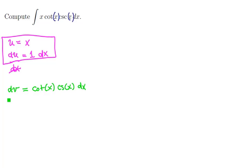And next, let's integrate the differential on both sides. So we're going to have v is equal to, the antiderivative here is negative cosecant of x. So now we have all of the terms.